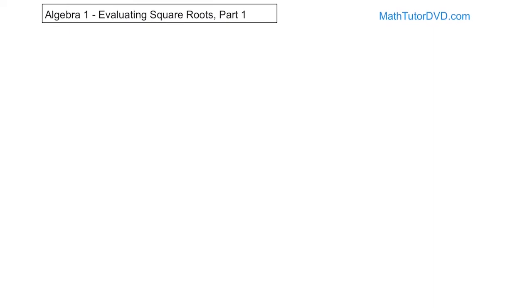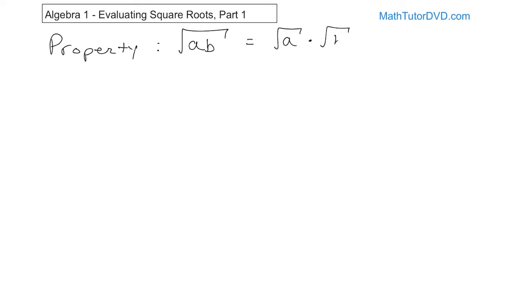We're going to do another property, and then we're going to solve a ton of problems. The next property is really, really important: the square root of A times B, where A and B are positive numbers, is equal to the square root of A times the square root of B. So if you have two numbers multiplied under a radical, you can break this into separate square roots and multiply them afterwards. Whether you multiply them underneath or separately, you get the same answer either way.